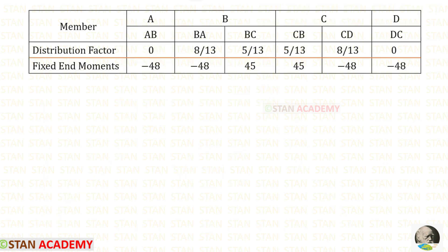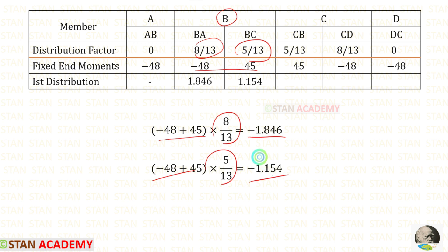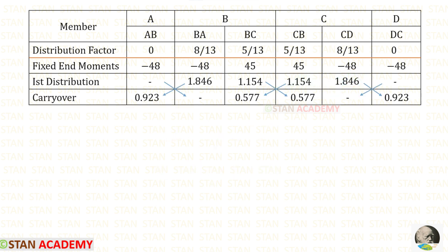Now let us start the sway moment distribution table. Enter all members, distribution factors, and fixed end moments. For the first distribution at joint B, add the two fixed end moments and multiply by distribution factors — the result is negative, so enter as positive. For joint C, add the two values and multiply by distribution factors — the result is negative, so enter as positive. Then carry over by dividing values by 2.